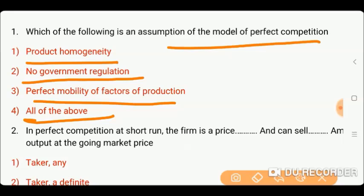Friends, the right answer is D, which is all of the above. Because in perfect competition, product homogeneity, no government regulation, and perfect mobility of factors of production are all assumptions.